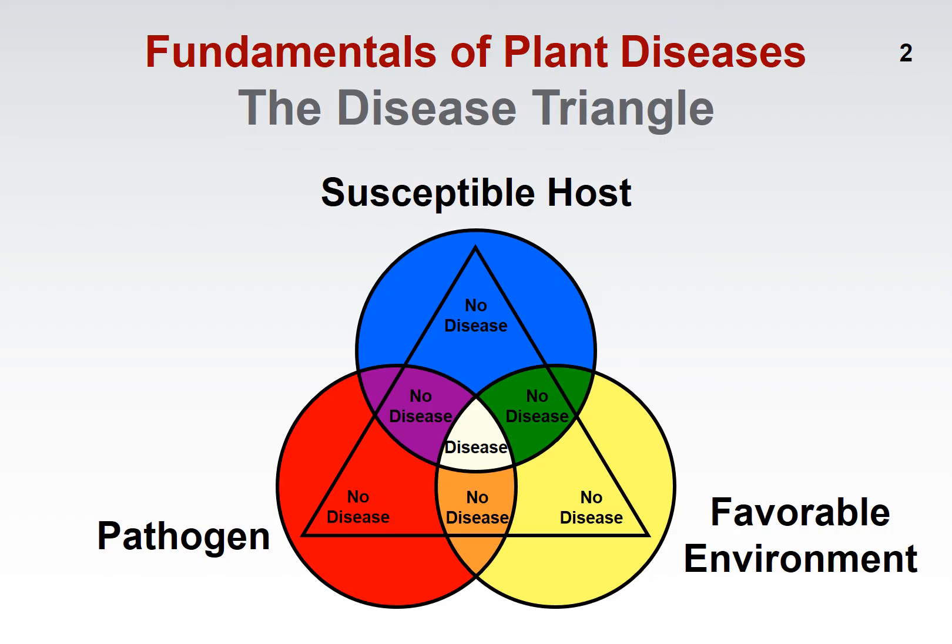The third important component in the disease triangle is something called a favorable environment. You need weather conditions that are favorable to allow the interaction between the pathogen and the susceptible host to occur. Oftentimes, what we're really talking about in terms of favorable environment is a lot of moisture, because many disease-causing organisms tend to like wet conditions. It's really this interaction between the susceptible host, the pathogen, and the favorable environment which leads to what we call disease — some sort of abnormality in the plant.